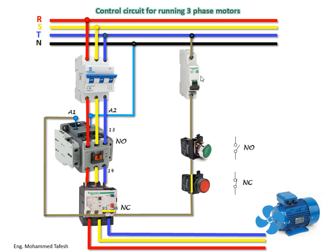The first thing to do is look at the main circuit breaker of the control panel and make sure it is raised in the direction of operation, not descended in the direction of stopping. We raise the breaker button so it is in the ON state. Then we run the motor by pressing the green start button, and as soon as you press it, it becomes normally closed.